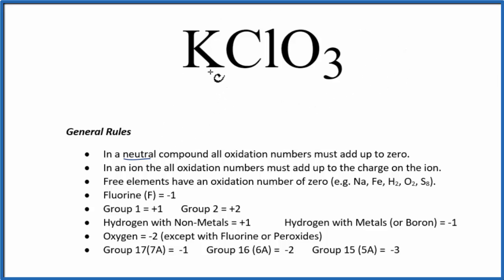The oxidation numbers for all of the elements are going to add up to zero. So we go down, we see that group 1, potassium is in group 1, so the oxidation number on the potassium, the K here, that's a plus 1.